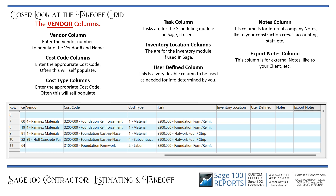The vendor columns include a column for the vendor and cost codes. The cost codes are unique to the company cost type — those are preset types one through five, with four additional ones you can select. Task columns are for the scheduling module. Inventory location columns are for the inventory module. The user-defined column lets you choose what you want it to do, how you want it to act, and what type of data to put in — dates, numbers, text, that type of thing. The last two columns are the notes columns: internal company notes and export notes, which are for export to your client.